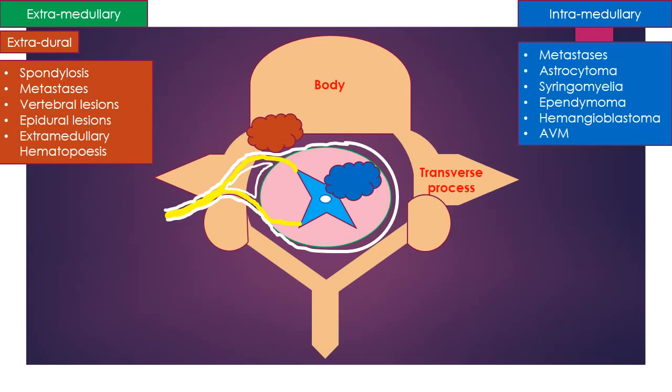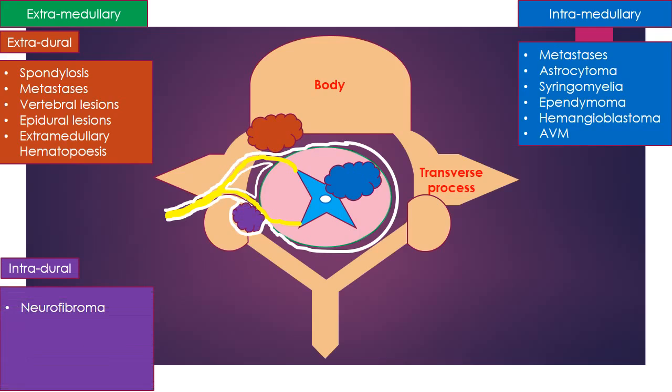The second type of extramedullary lesion is intradural, which arises inside the dura mater but outside the spinal cord proper. Examples are neurofibroma, meningioma, and rarely chordoma, lipoma, and sarcoma.